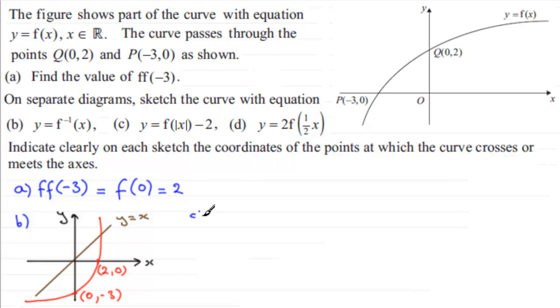Now in part c we've got the graph then of y equals f of mod of x minus 2. And for something like this, this is a combination of two transformations. What we do first of all is consider the graph of f of mod x, and the graph of f of mod x just takes the right hand side of the original graph, so this part of the curve here, and it reflects this in the y axis. So what you get then is something like this. We take the right hand side of the graph and we reflect this in the y axis.